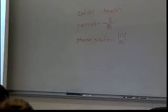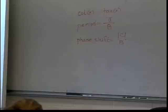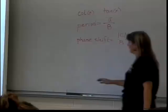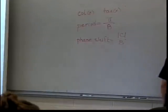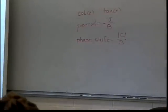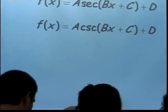2π over B is the period, and absolute C over B is the phase shift. What about for my secant and my cosecant? So once again, A is going to mess with things up and down, so it's going to mess with verticalness. It's going to stretch and shrink. What will that do in terms of my graphs?